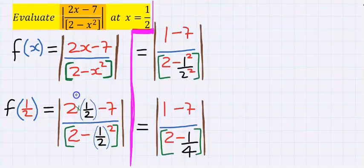Next, at the numerator, 2 will cancel with 2, and you are left with 1 minus 7. 1 squared divided by 2 squared will give you 1 over 4. Hence, at the denominator, you are left with 2 minus 1 over 4.